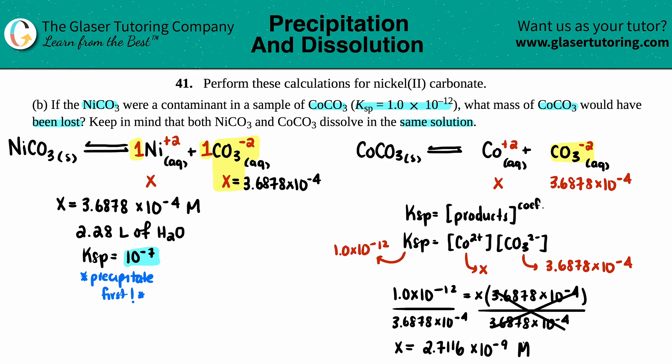They're asking for what mass of the cobalt carbonate was lost. Remember, mass is in grams. I can't use molarity because that's moles over liter - I have to convert it into grams over liter. So 2.7116 times 10 to the negative ninth molarity is the same thing as moles of the CoCO3.